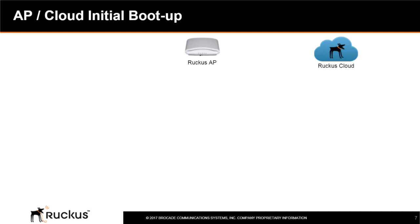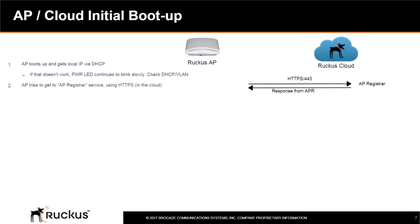This section goes deeper into the boot-up procedure. First, the AP boots up and gets a local IP address via a local DHCP server. If that doesn't work, the power LED will continue to blink slowly — check for local DHCP or VLAN issues. Next, the AP tries to reach the AP registrar using HTTPS in the cloud. If it gets a response from the AP registrar with the cloud controller information, the AP tries to establish a connection to the cloud controller using HTTPS. If successful, the Control or DIR LED goes solid green.